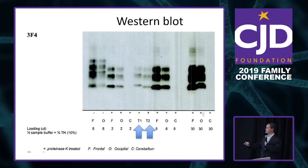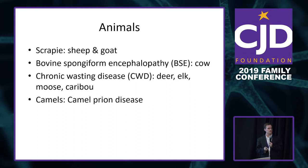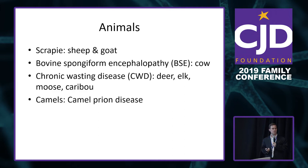We also determine what type of prion protein it is — type 1 or type 2 — which is important for typing. Prion disease occurs in humans but also in animals. The first described was scrapie in sheep and goats — named because the animals scrape against fences due to itching. There's also bovine spongiform encephalopathy — mad cow disease — and chronic wasting disease in deer, elk, moose, and caribou. In recent years we've learned camels can also get prion disease, simply called camel prion disease.